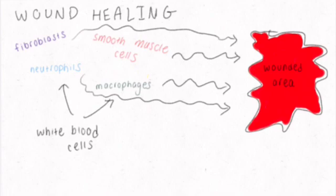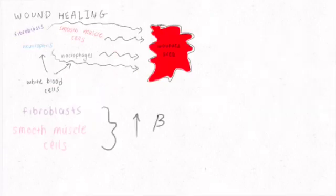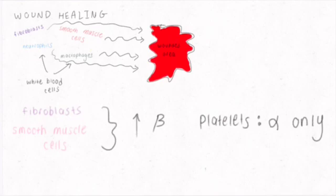Stimulation means that the cells that have these receptors are recruited to the wounded area. The specific cell response depends on which of the receptor types the cell expresses: type alpha or beta. Fibroblasts and smooth muscle cells express more betas, while human platelets express only alpha receptors.